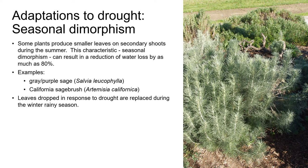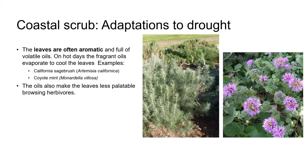The leaves dropped in response to summer drought are replaced again during the winter rainy season. Another adaptation to drought is that some species in Coastal Scrub have highly aromatic leaves full of volatile oils. On hot days, the fragrant oils evaporate, which cools the leaves. Examples include California Sagebrush, Artemisia californica, and Coyote Mint, Monardella villosa. The volatile oils in these plants also make the leaves less palatable to browsing herbivores such as deer.